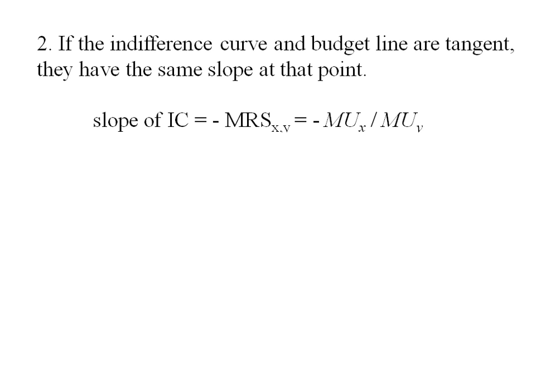Looking back at our functional form we've got utility equals x times y. When I take the partial derivative of utility with respect to x I get y and when I take the partial derivative of utility with respect to y I get x. Plugging those into my marginal rate of substitution I find that the slope of my indifference curve is the negative of y over x.